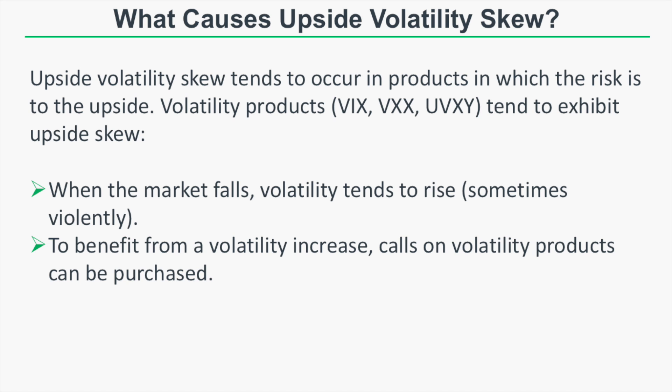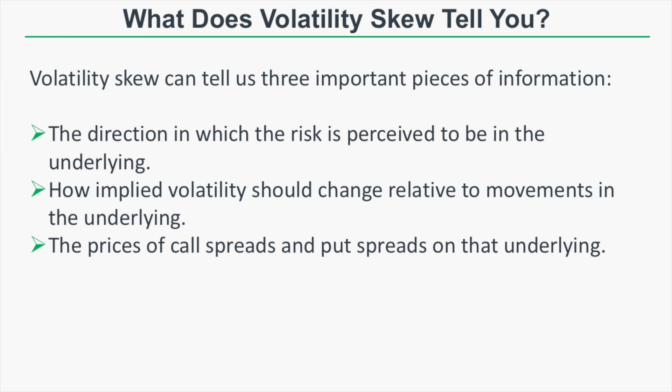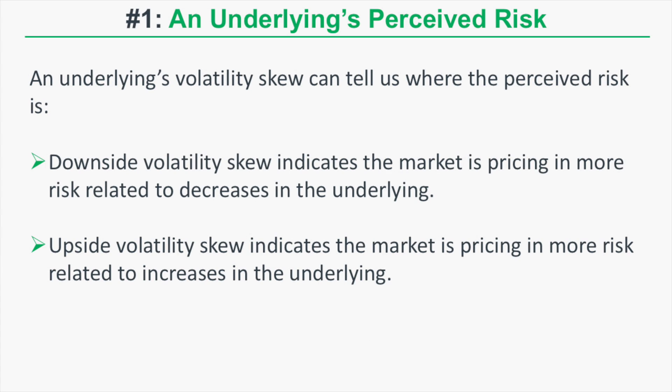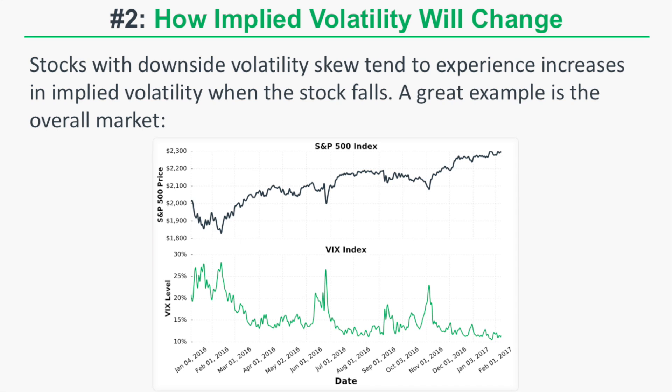Now that you know what volatility skew is, let's discuss three things it can tell you. First, the direction in which the risk is perceived to be in the underlying. Second, how implied volatility should change relative to movements in the underlying. Third, the prices of call spreads and put spreads on that underlying. Regarding perceived risk: downside volatility skew indicates that the market is pricing in more risk related to decreases in the underlying, while upside volatility skew indicates more risk related to increases.